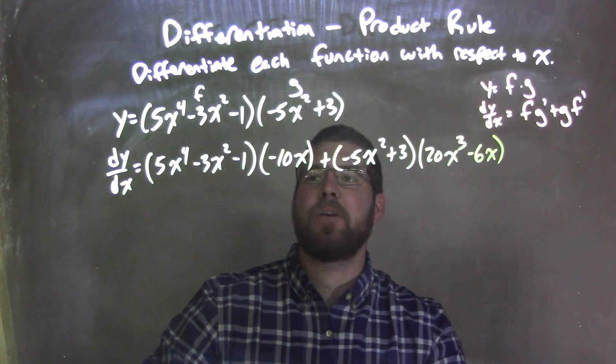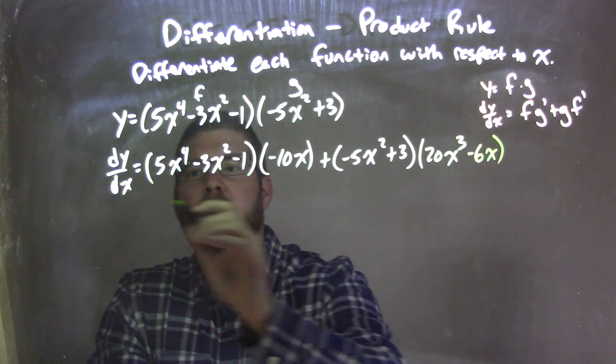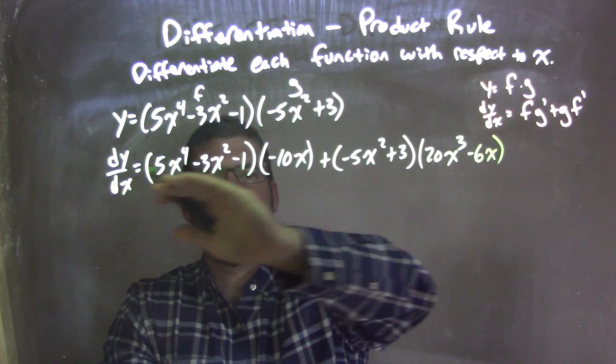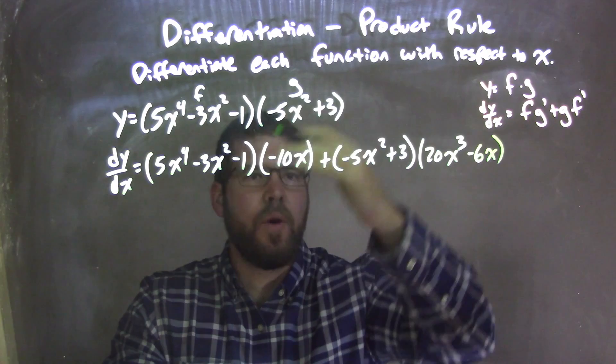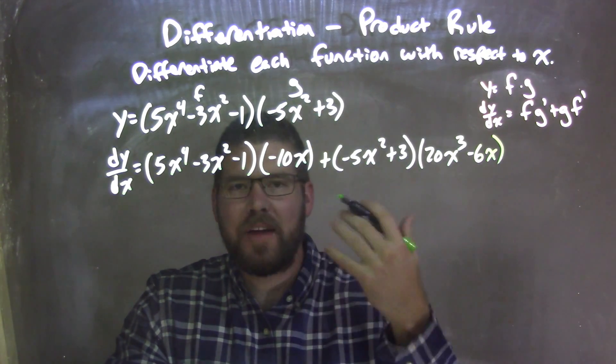Okay, so now I need to distribute. Let's go simplify. We've already taken our derivative, so here's the derivative where it exists. Now we need to simplify it. At this point, the rest is just algebra.